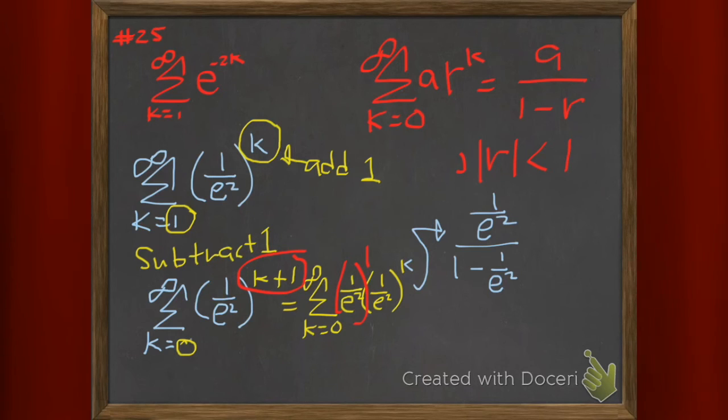So that does converge to, this is my a, first term, over 1 minus e to the r, common ratio. We do some addition.